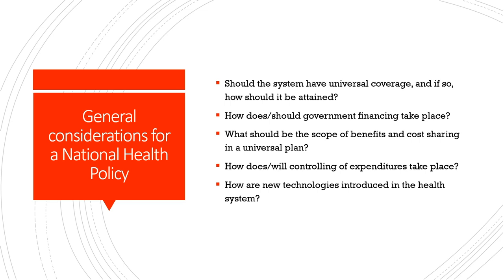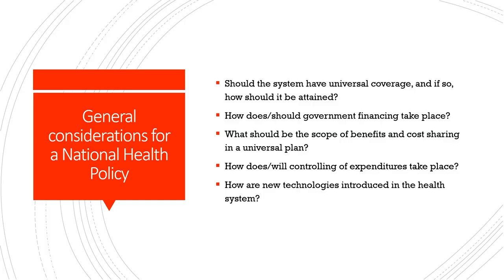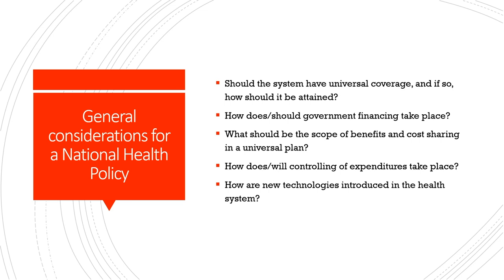Secondly, how does government financing take place? What should be the scope of benefits and cost sharing in a universal plan? How does controlling of expenditure take place — pertinent when discussing increasing government expenditure as a percentage of total GDP. And finally, given the technological change engulfing the health sector, how are new technologies introduced into the health system?